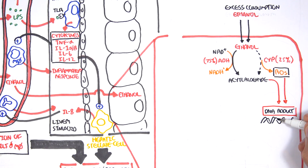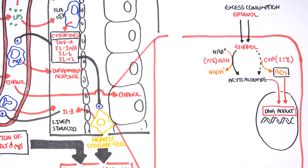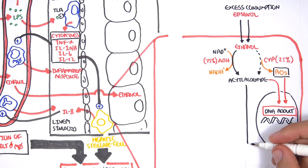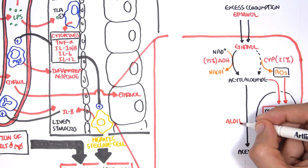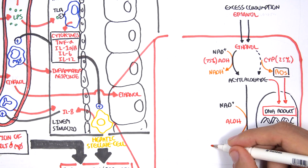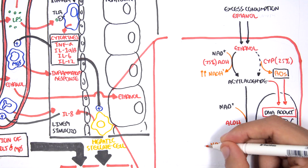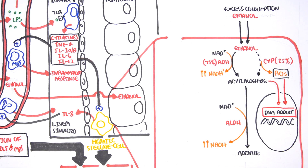If we have too much acetaldehyde and reactive oxygen species, this stuff damages our body. For example, it can cause formation of DNA adducts, resulting in mutations. If we have so much ethanol, we start using the cytochrome pathway more, producing a lot of reactive oxygen species. When we have a lot of acetaldehyde, this can also be converted to acetate through the enzyme acetaldehyde dehydrogenase, and in this reaction NAD is again reduced to NADH. So we are producing a lot of NADH when we drink a lot of ethanol - just keep that in mind.